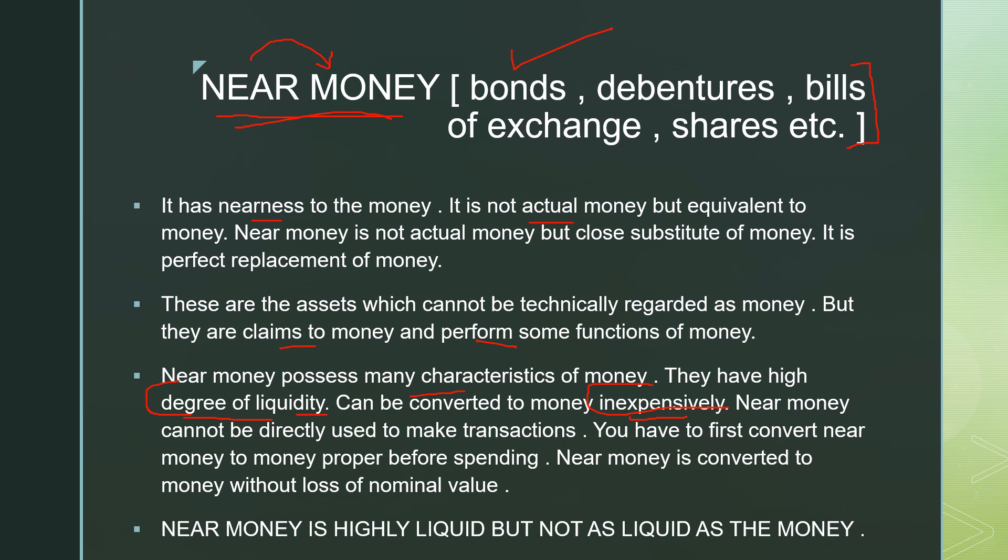However, you cannot directly make transactions using near money. If you have a bond and go to a furniture shop, you cannot give the bond in exchange for a table — this doesn't happen. When buying furniture, you must pay hard cash. So first you convert your bond to actual cash and then go to the furniture shop. Near money is not a document you can exchange for anything directly; you must convert it into money proper before you spend it.